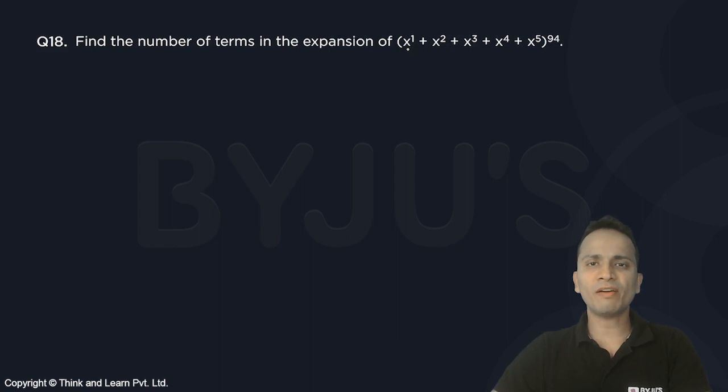Inside the bracket you have x raised to the power 1, x raised to the power 2, x raised to the power 3, x raised to the power 4, and x raised to the power 5, and the whole thing raised to the power 94.